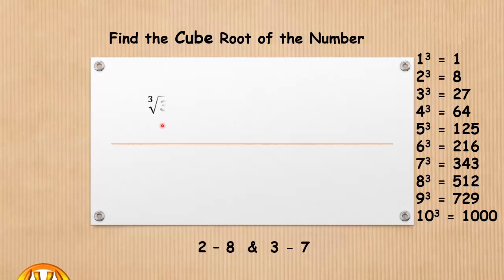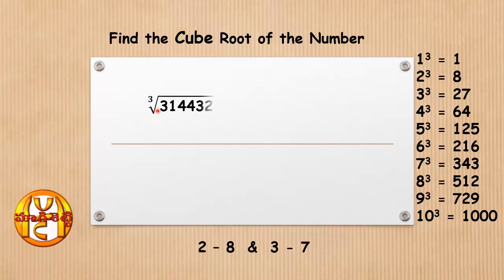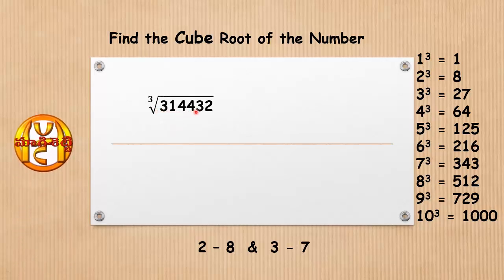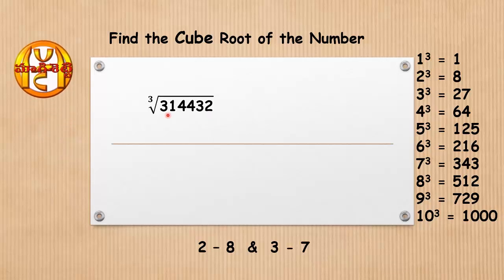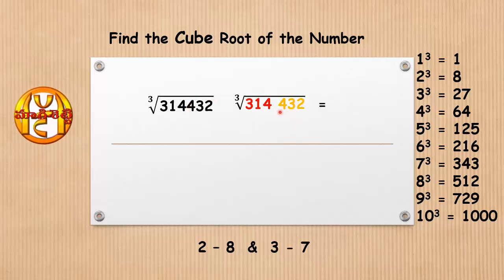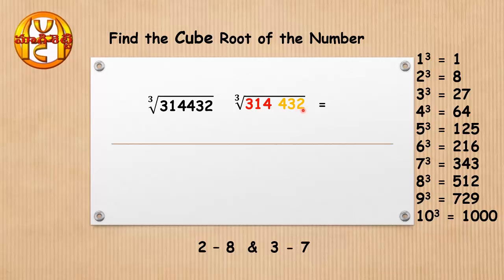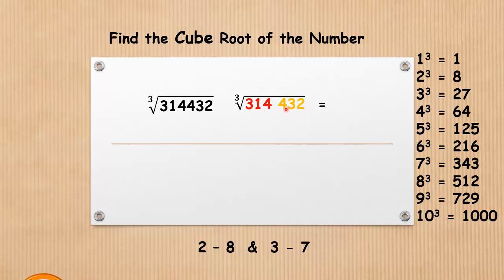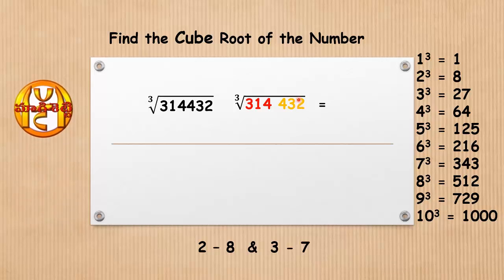Now take an example to find the cube root of 314432. Here we have six digits. Forming two groups by taking three digits each: 432 is the first group and 314 is the second group.